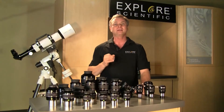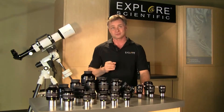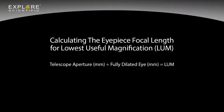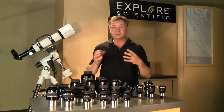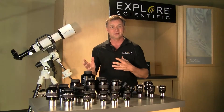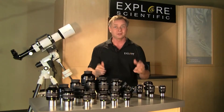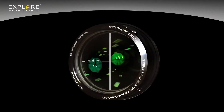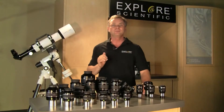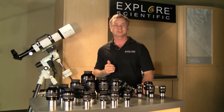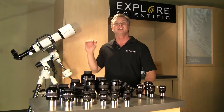Here's a useful formula for calculating the eyepiece focal length for lowest useful magnification. Take the telescope aperture in millimeters and divide it by the fully dilated eye in millimeters — that gives you lowest useful magnification. Then take the telescope focal length in millimeters and divide it by the lowest useful magnification number, and that will tell you which eyepiece focal length you need. Another rule of thumb is 3.5 power per inch of aperture: with a 102mm (4-inch) aperture telescope, the lowest useful magnification is 14 times.